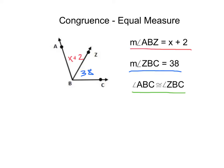If we know that those have the same measure, we can set them equal to one another. x plus 2 equals 38 since we know that they're congruent. From there we can solve for x.